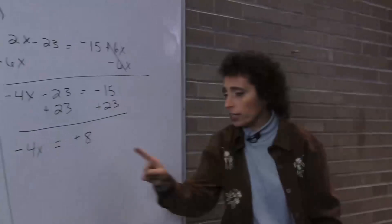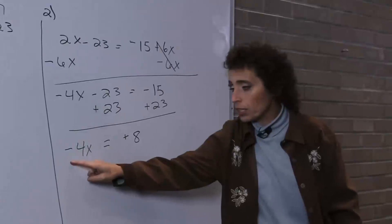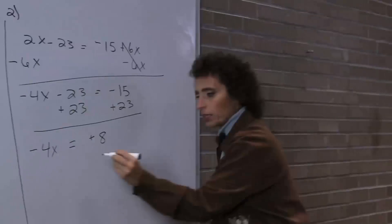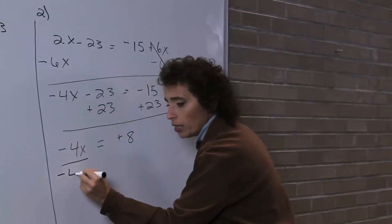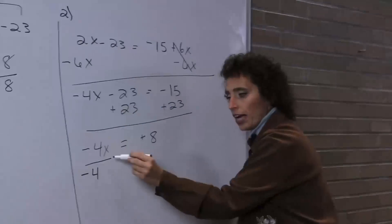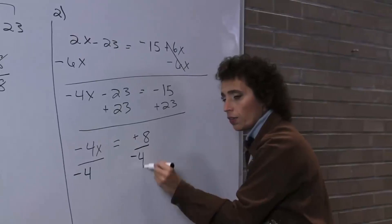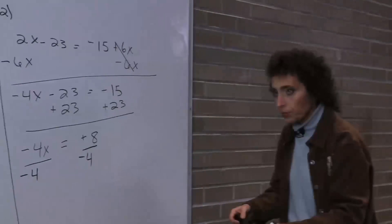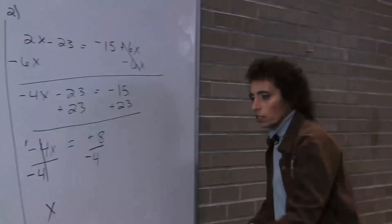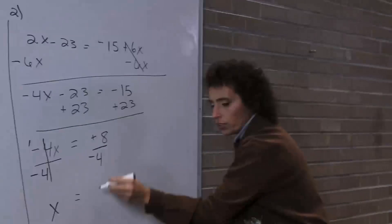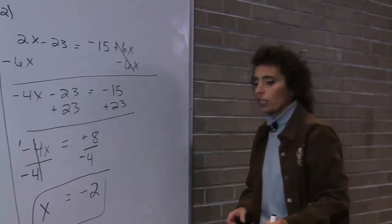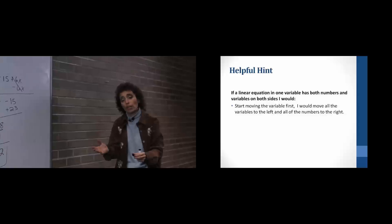Not done, because there's a coefficient different from 1 attached to the x. So I'm going to divide by negative 4, because it's the opposite of multiplying. If I divide that side by negative 4, I divide the other side by negative 4. Signs are different, so we get a negative. 8 divided by 4 is 2. So the answer is x equals negative 2.